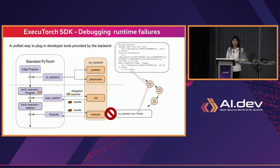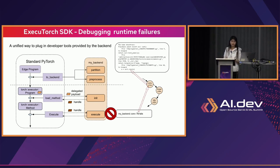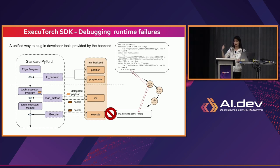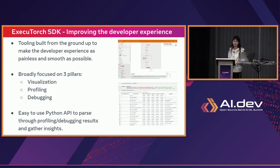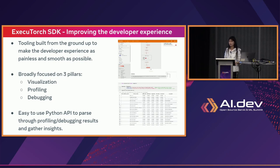With ExecuTorch, we also provide native SDK support. For example, if there's a runtime failure at a given instruction, we know a node — say node 73 — fails. That 73 is called a debug handle. By using the debug handle, we can trace back to the exported graph node, which is also 73, and then trace back to the exact Python line. We also provide a list of other SDK tools aiming to provide a smooth developer experience, focused on visualization, profiling, and debugging. We aim to provide easy-to-use Python APIs to parse profiling and debugging results and gather insights.